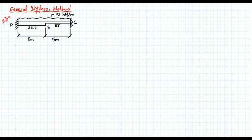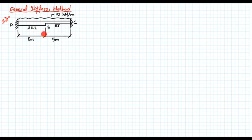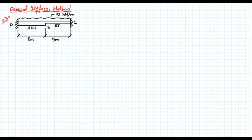Let's continue with our second example problem. In this problem we have a continuous beam with fixed-fixed ends, but this time half of the beam is stronger than the other half. The first member AB has two EI, the other one has EI, and we have a uniformly distributed load. Remember that we already solved this problem using the slope-deflection method. Now let's solve it with the general stiffness method.